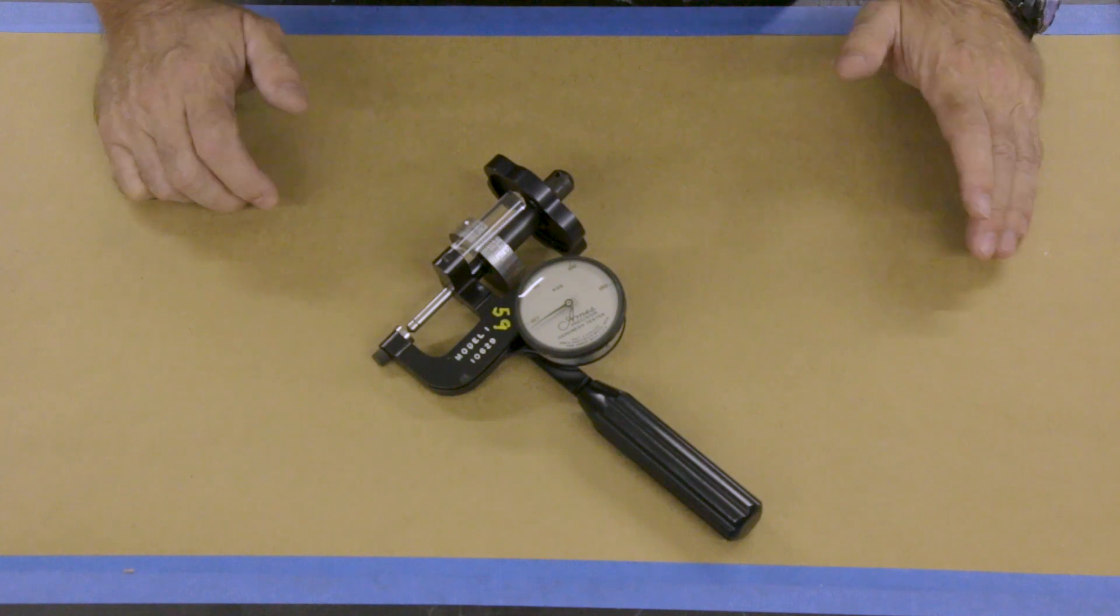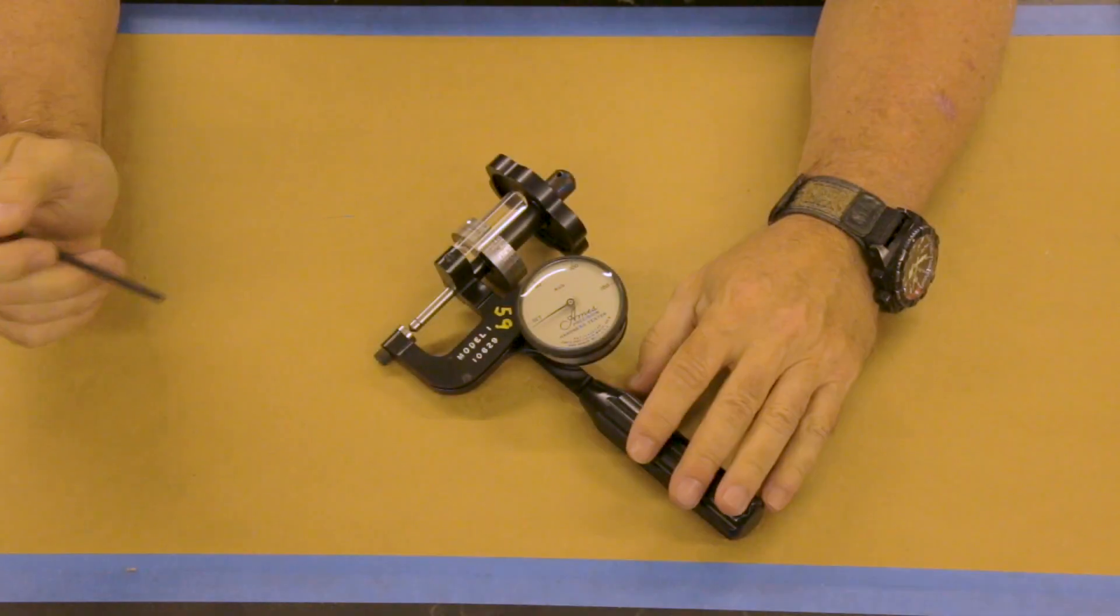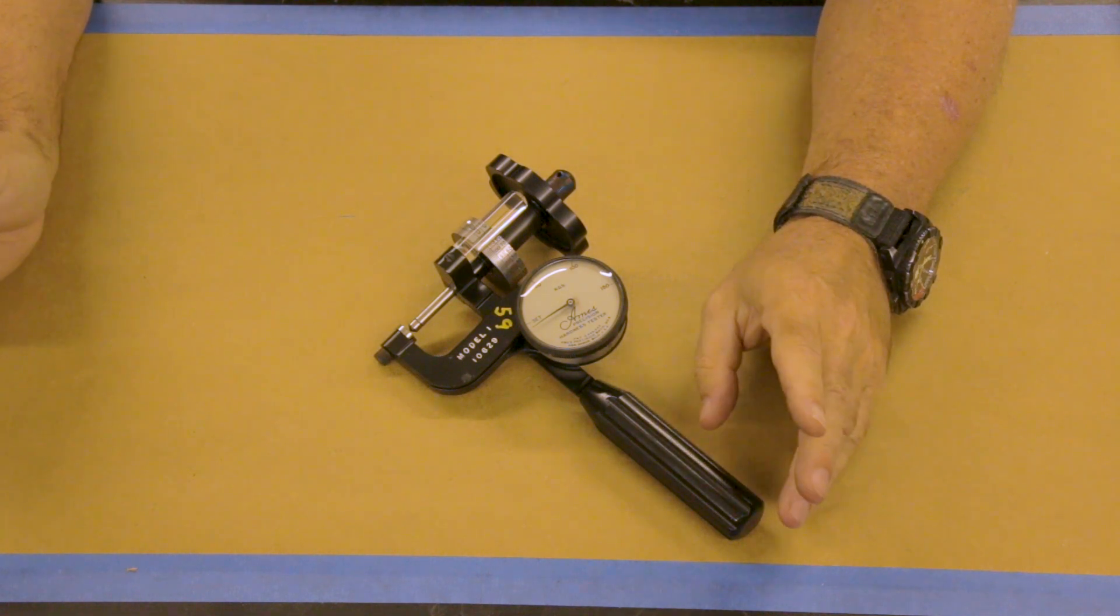One of the nice things about this tester is that it takes up no bench space. You can put it on a shelf and forget about it and pull it out when you need it. So in a small shop, it's ideal.